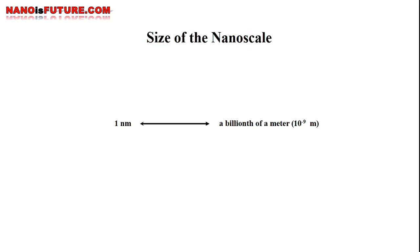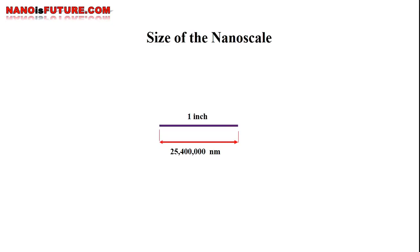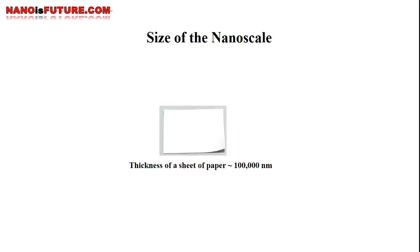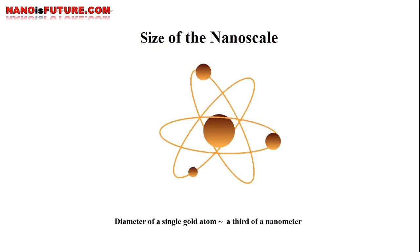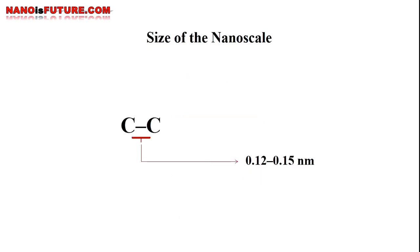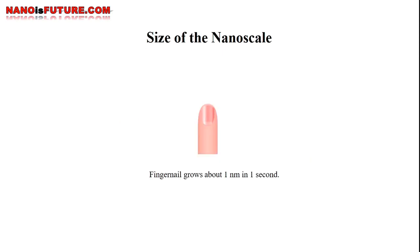One nanometer is a billionth of a meter. There are 25,400,000 nanometers in one inch. A sheet of paper is about 100,000 nanometers thick. A human hair is approximately 80,000 to 100,000 nanometers wide. A gold atom is about a third of a nanometer in diameter. Typical carbon-carbon bond length is in the range of 0.12 to 0.15 nanometers. And your fingernail grows about 1 nanometer in one second.